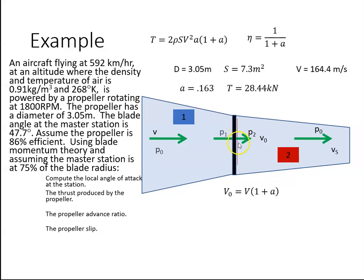That's what the velocity of the air is going through there. So that velocity V₀ going through here is V plus aV, which can be rewritten as V times (1 + a). When I plug in the values—this is 164.4 times (1 + 0.163)—I know that the velocity going through the propeller at this point is 191.2 meters per second.